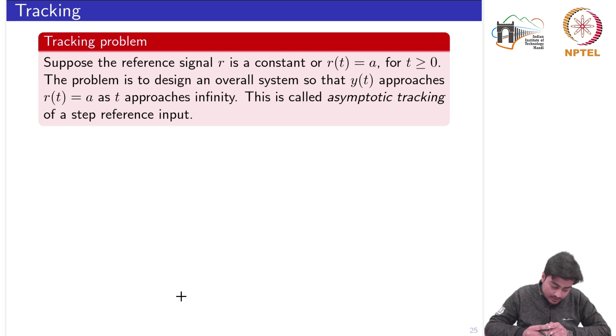The problem is to design an overall system, the closed loop system, so that the response y(t) approaches this reference signal A as t approaches infinity. This is called the asymptotic tracking of a step reference input.